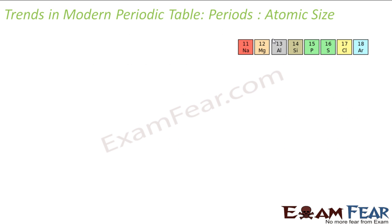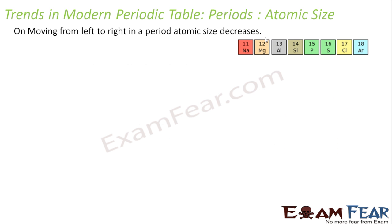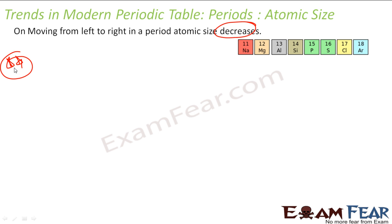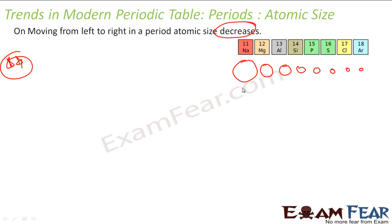To talk about atomic size — the atomic size decreases. Please note, this is critical. If you move from here, the atomic size of each successive element is progressively smaller. It decreases.